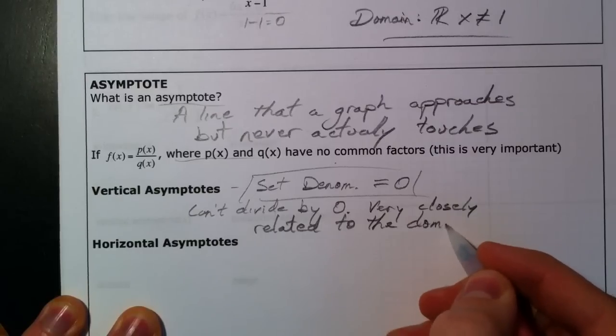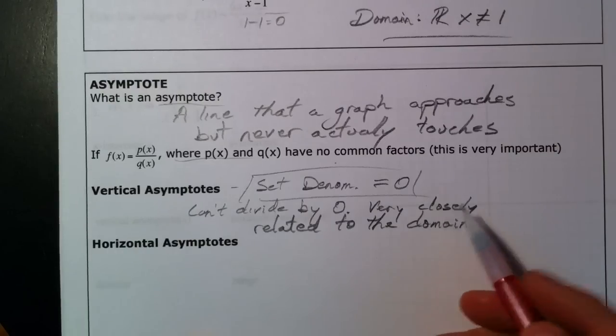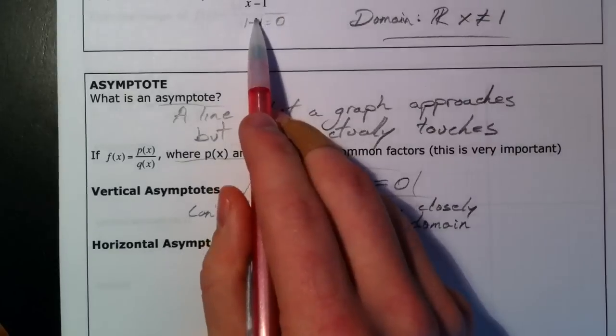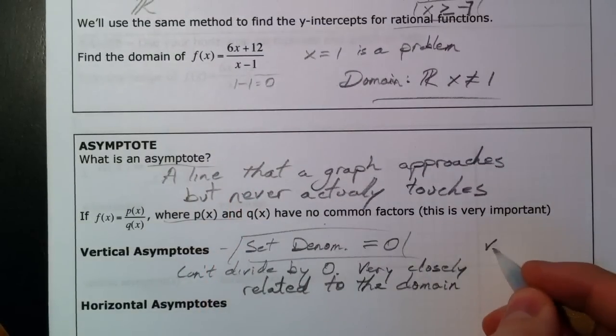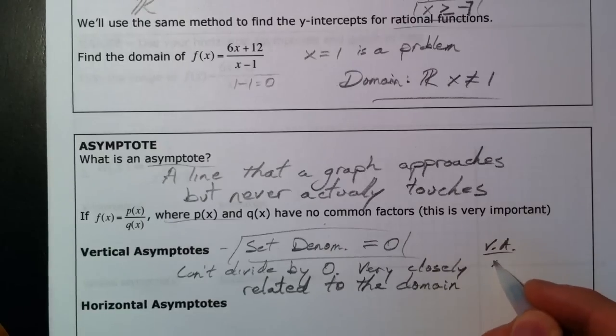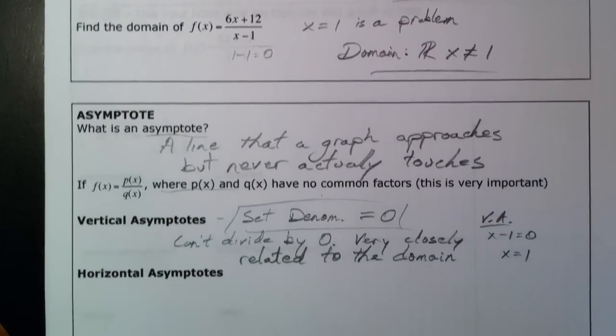And so, notice that on this one, our vertical asymptote, if we went back to our x minus 1, our vertical asymptote would be x minus 1, set it equal to 0, so our vertical asymptote is x equals 1. And that's going to show up on our graph.